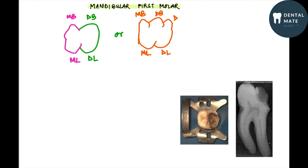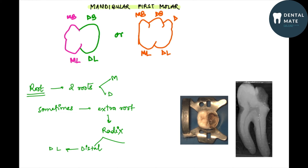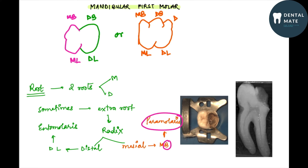The root of the mandibular first molar usually has two roots: mesial and distal. Sometimes there could be an extra root present, known as radix. If this root is present distally on the distolingual side it is known as radix entomolaris, whereas if it is present mesially on the mesiobuccal side it is known as paramolaris.